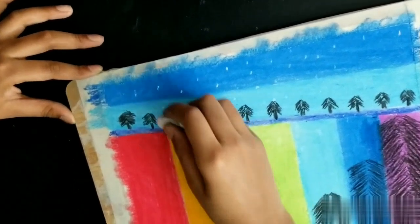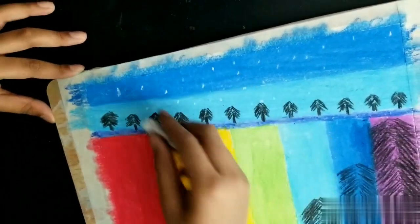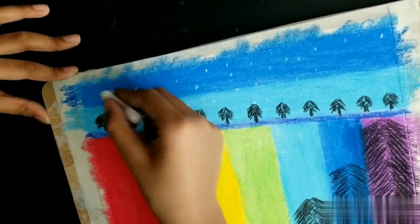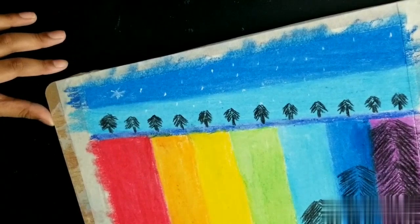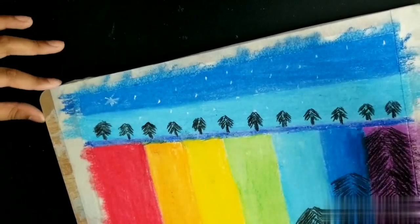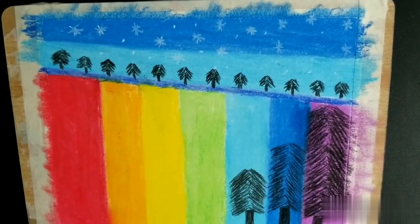And I'm going to now do the stars. To do the star, I do like this: a straight line and another like an X connecting. And you can do more than one. So I did stars like this.